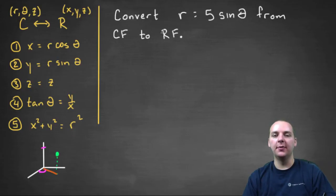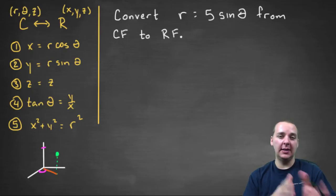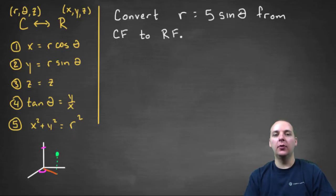In this exercise we're being asked to convert the equation r equals five sine theta from cylindrical form, because it has r's and thetas in it, into rectangular form.